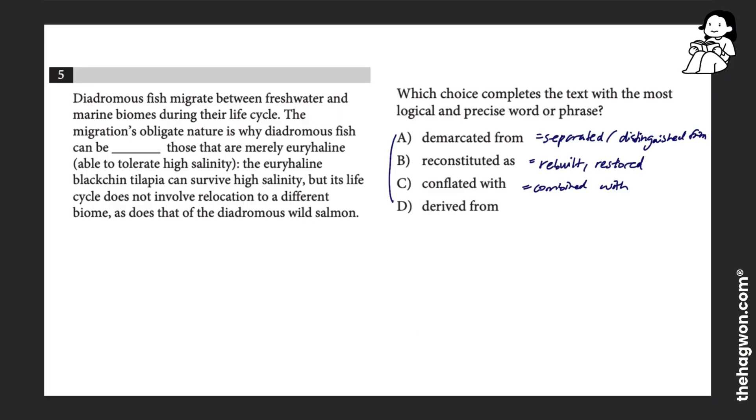Answer choice D, derived from, means that something is extracted or originates from something else. So A is derived from B means A comes from B. So those are the four answer choices. I'm going to go look at this passage now.